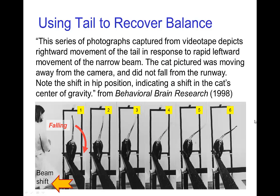Finally, if the character has a tail, they can also make use of the tail in order to recover balance. Here you see some photos from an experiment where a cat is walking on a beam. The beam is pulled to one side, so the cat would be falling towards screen right, but the cat throws its tail into the fall — the same way we would throw our arms or upper torso. That allows the cat to keep its center of gravity over the beam that it's walking on.